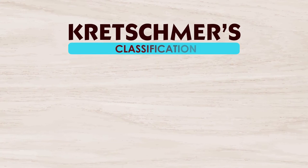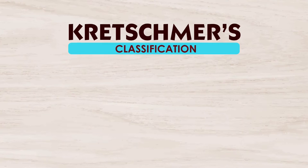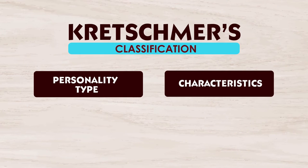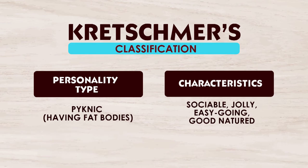Another classification is given by Kretschmer. He based his classification on biological types which are based on physical structure — that is, how the person looks. First of all there are picnic types. They have fat bodies, and their characteristics are that they are jolly, sociable, good-natured, easy-going, happy-go-lucky — very happy sort of people.